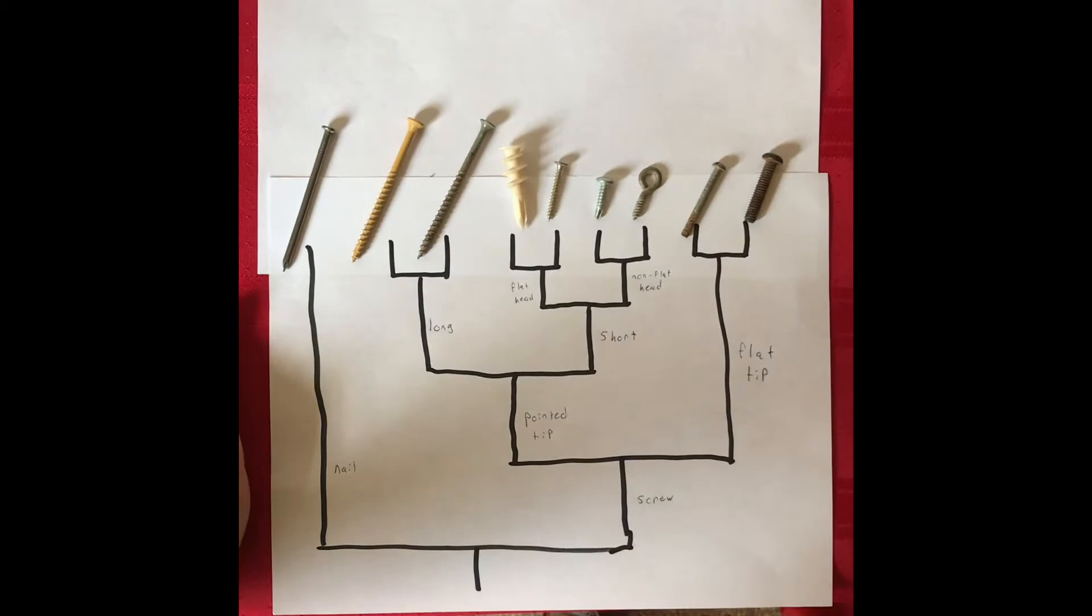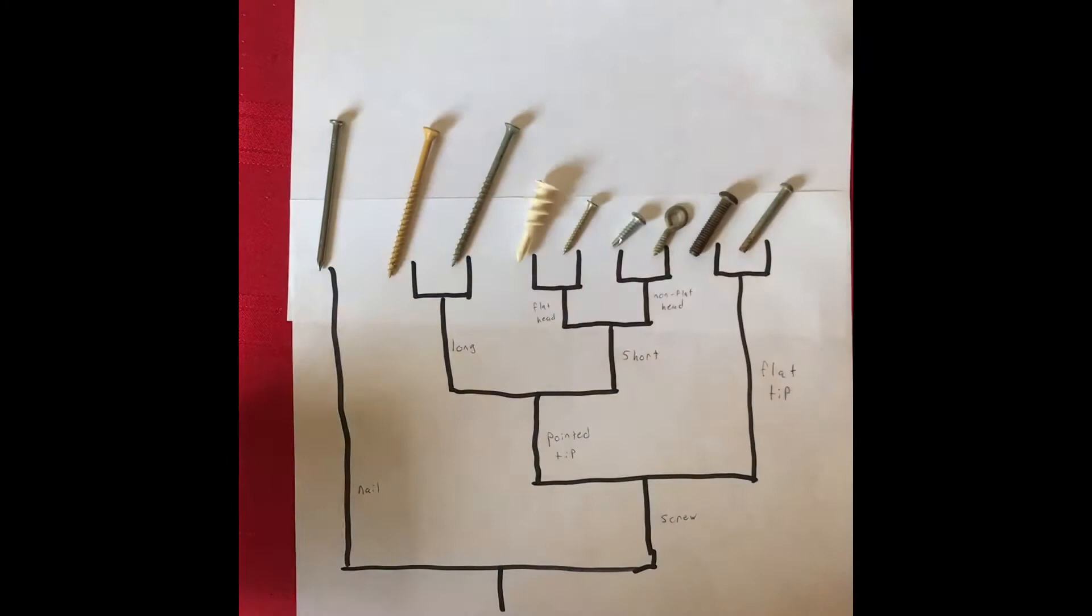Each of these internal nodes represent cladogenesis. This is when a single lineage diverges into two species.